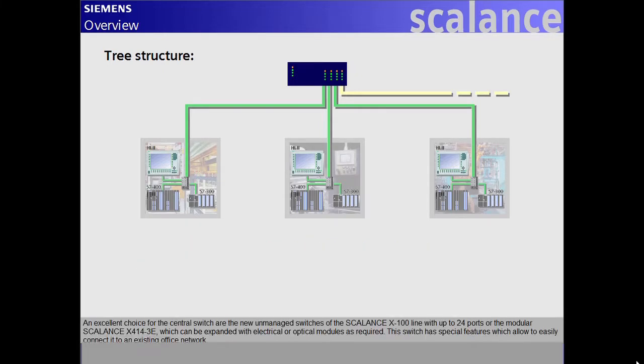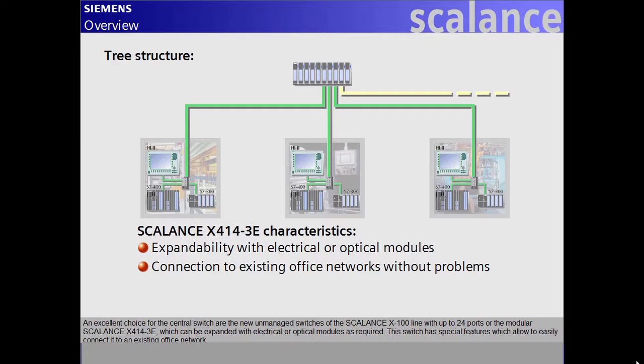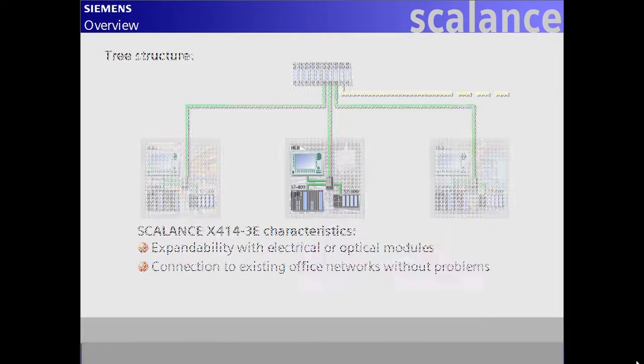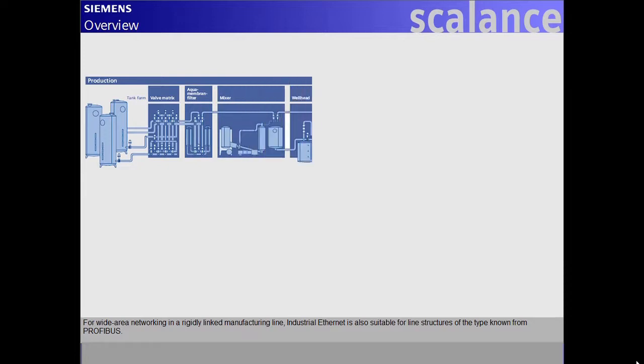An excellent choice for the central switch are the new unmanaged switches of the Scalance X100 line with up to 24 ports, or the modular Scalance X414-3E, which can be expanded with electrical or optical modules as required. This switch has special features which allow to easily connect it to an existing office network. For wide area networking in a rigidly linked manufacturing line,